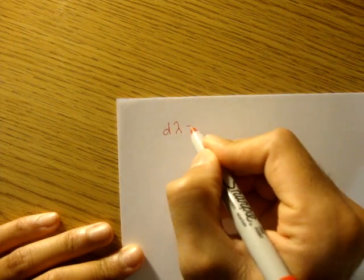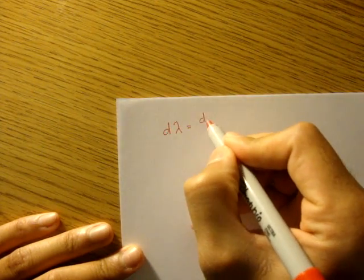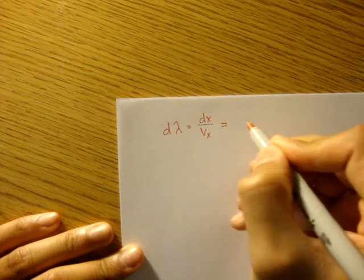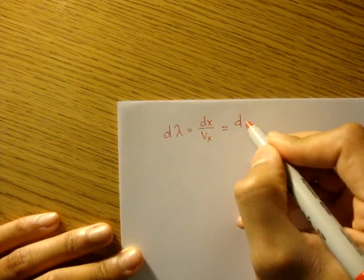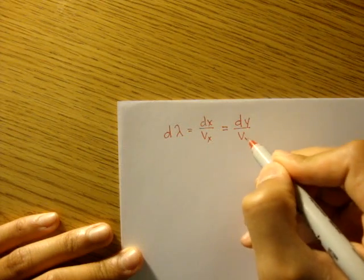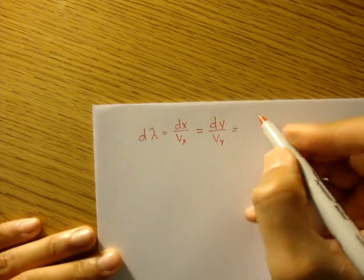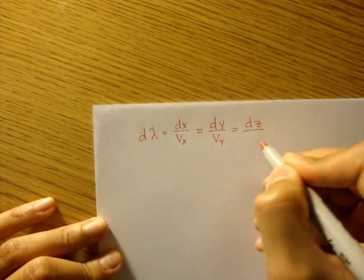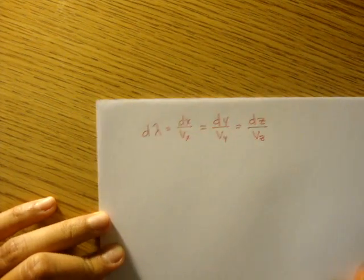Our streamline equation was d lambda is equal to dx over vx, which is also equal to dy over vy, which is equal to dz over vz.